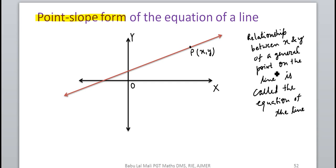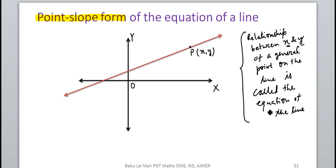Any equation that expresses the relationship between the coordinates x and y of a general point on the line is called the equation of the line. With the help of this equation, we can generate different points on the line.